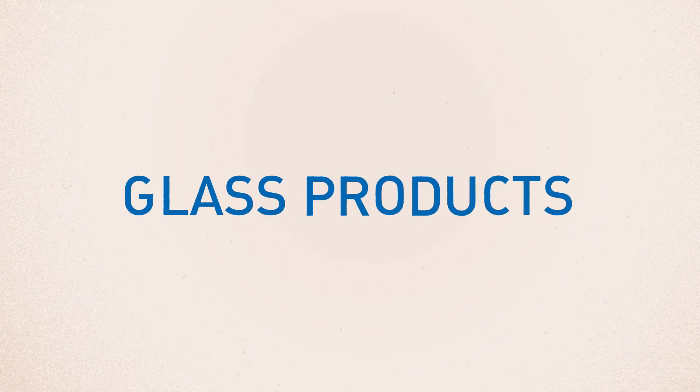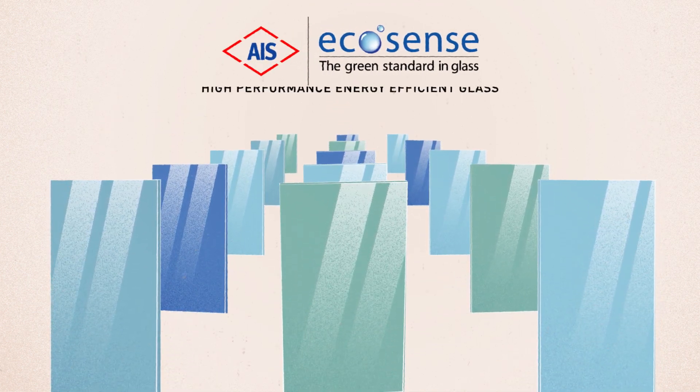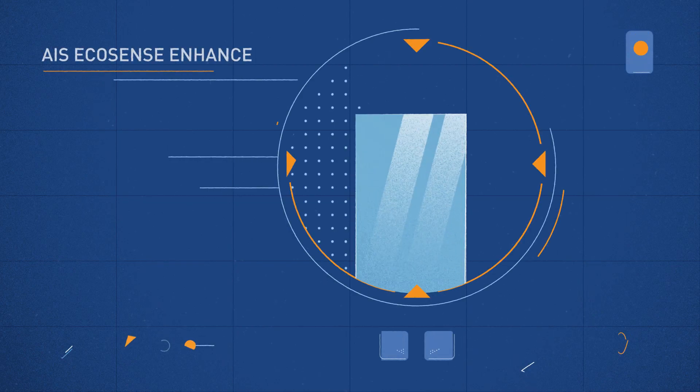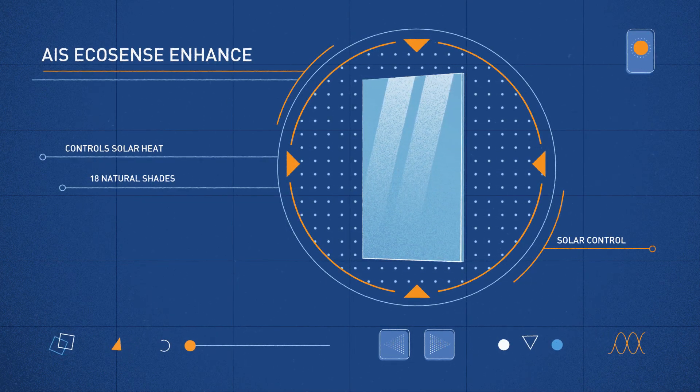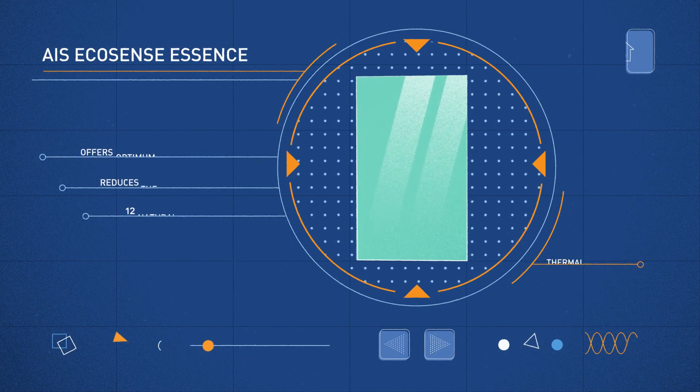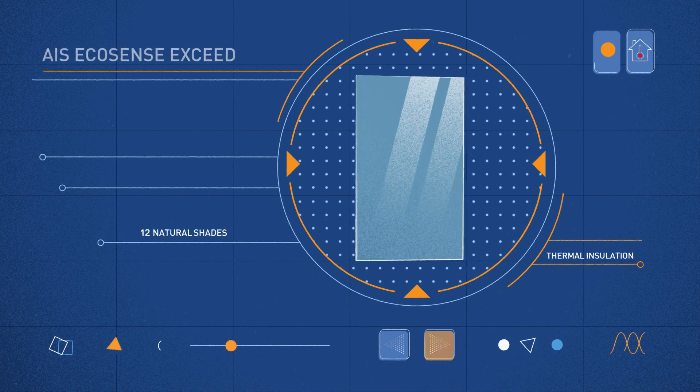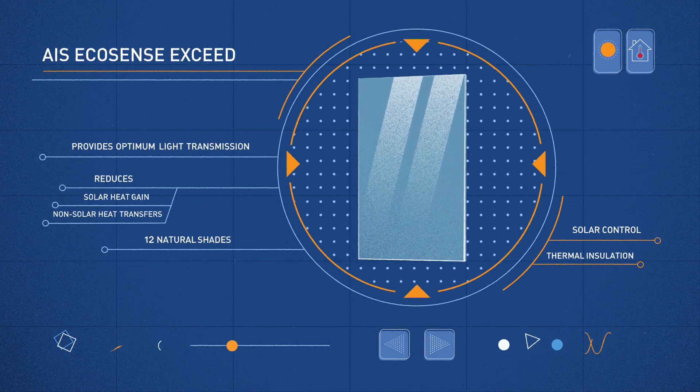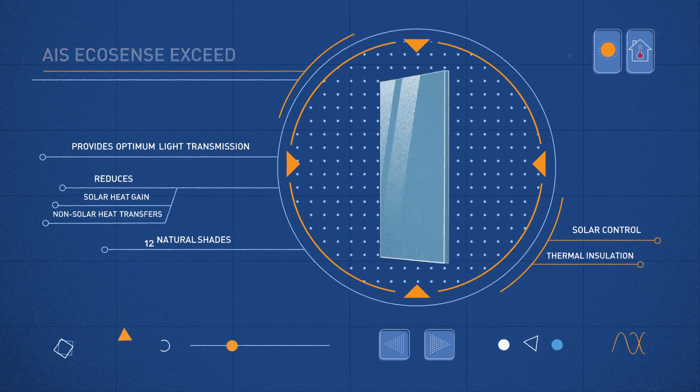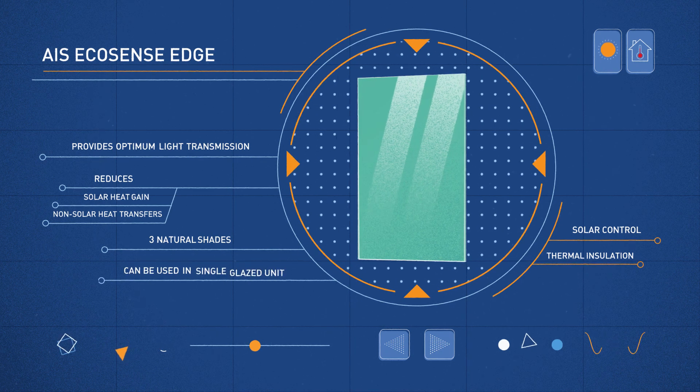Glass products. We offer a wide variety of products in the EcoSense range of soft-cored glasses that include EcoSense Enhance for solar control, EcoSense Essence for thermal insulation, EcoSense Exceed for solar control and thermal insulation, EcoSense Edge for solar control and thermal insulation in a single glazed unit,